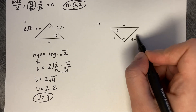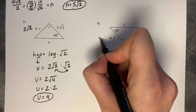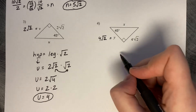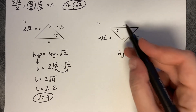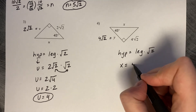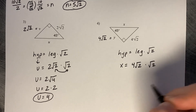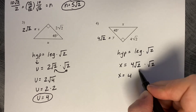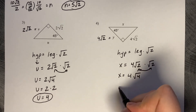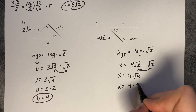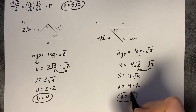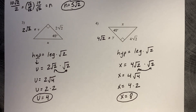Last example: the given leg is four root two, so y must also be four root two. The hypotenuse x equals the leg times the square root of two: x equals four root two times root two. Those combine to give four times the square root of four. A common error is saying that's 16 — don't forget to take the square root of four, which is two. So x equals four times two, which is eight. Remember, this pattern only works for a 45-45-90 degree triangle.